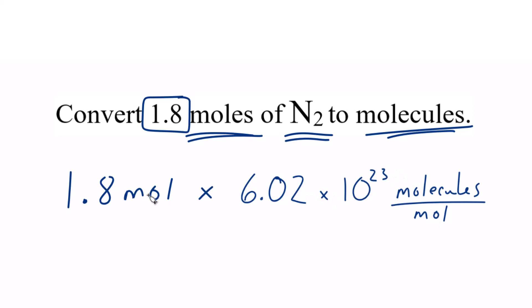So now when we multiply our moles by Avogadro's number, moles on the top and bottom, they cancel out. That leaves us with molecules, and that's what we're looking for. So we know we did it correctly if things cancel out the right way.